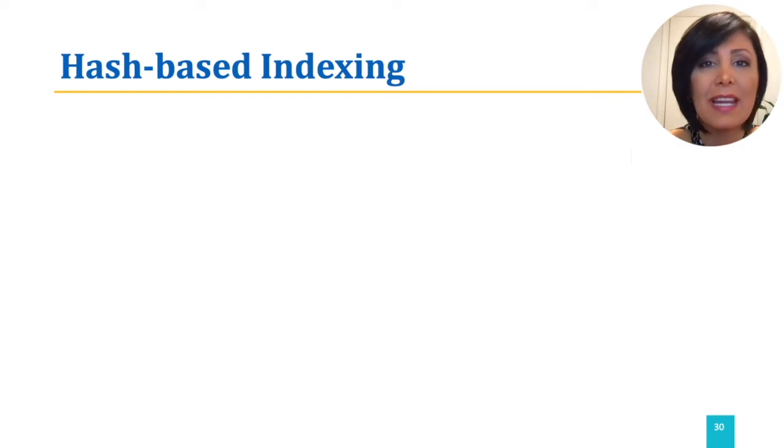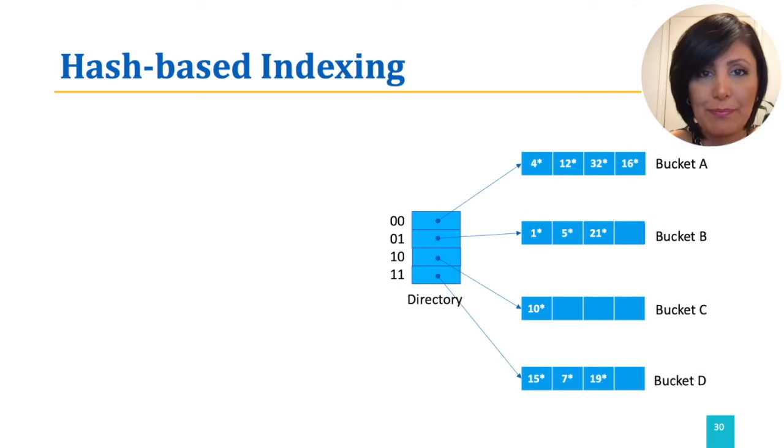Alternatively, we can have dynamic hashing such as extendable and linear hashing. Let's explore extendable hashing here, starting with our static hashing file shown in the figure. The bucket A in the figure is full. If we do not want to add overflow pages, a solution is to double the number of buckets and reorganize the file.